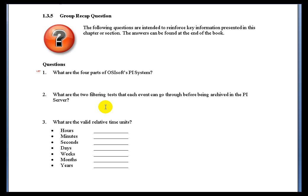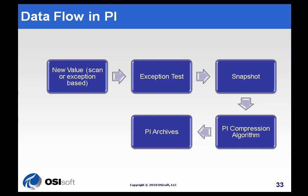Next question. What are the two filtering tests that each event can go through before being archived in the PI Server? Now, the first was a test to see if we had gone beyond certain dead bands, simple dead bands. We call that the exception test. And the results of that go into the snapshot.